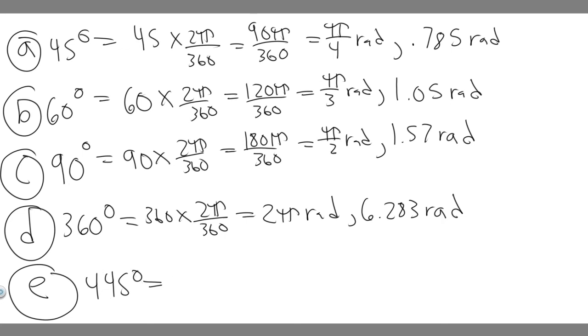Now let's do 445. So 445 times 2π over 360. So if you go ahead and do this, do 2 times 445, you'll get 890π over 360.